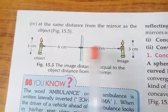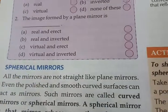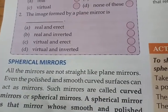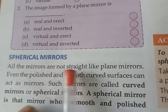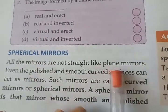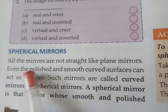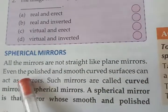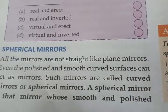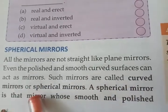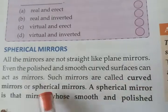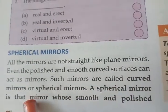Next is spherical mirror. A spherical mirror is one whose reflecting surface is curved. Not all mirrors are straight like a plane mirror — even a polished, smooth curved surface can act as a mirror. Such mirrors are called curved mirrors or spherical mirrors. A spherical mirror is a mirror whose smooth, polished reflecting surface is curved.